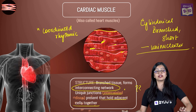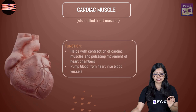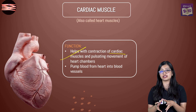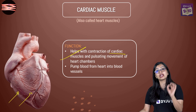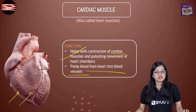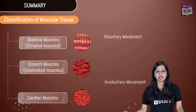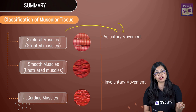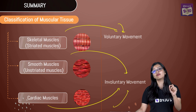Cardiac muscles are responsible for the continuous rhythmic contraction and relaxation observed in the heart, which is what pumps blood to different parts of the body. To summarize: skeletal or striated muscles are responsible for voluntary movement, while both smooth muscles and cardiac muscles are responsible for involuntary movement.